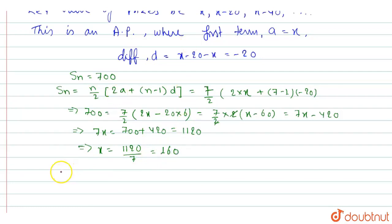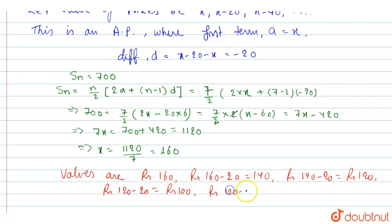So our values will be rupees 160, then rupees 160 minus 20 that is 140, then rupees 140 minus 20 that is rupees 120, rupees 120 minus 20 that is rupees 100, rupees 100 minus 20 that is rupees 80.